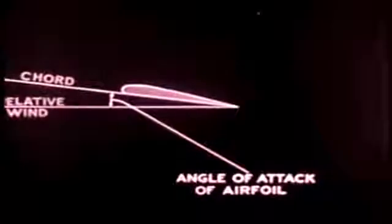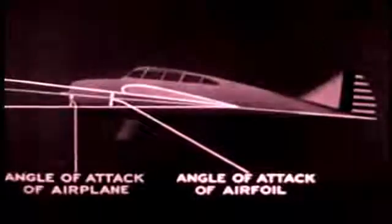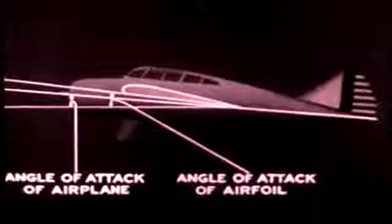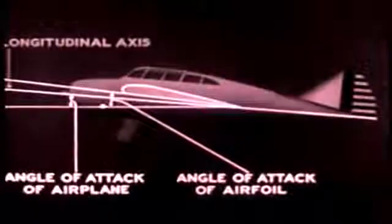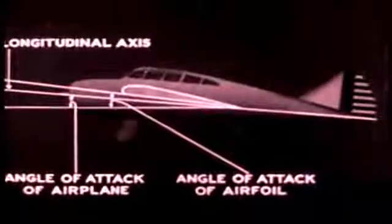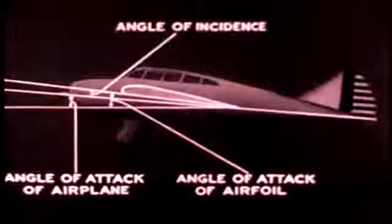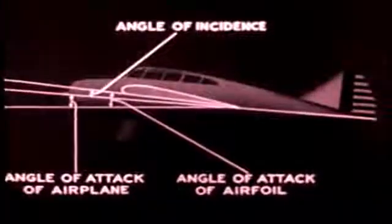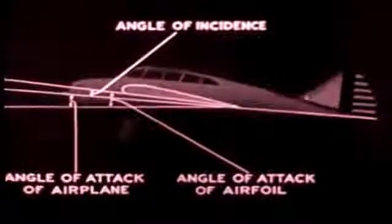The angle of attack of an airfoil was shown to be the acute angle between the cord of the airfoil and the relative wind. The angle of attack of the airplane as a whole is the acute angle between the longitudinal axis of the airplane and the relative wind. The difference between these two angles is constant for any given airplane, and is called the angle of incidence.